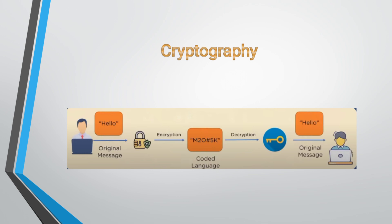Here the image shows an example of a small message transmitted between two parties. Here the message is 'hello'. Then in the encryption process, using the encryption algorithm, the hello message is converted into an unreadable format. Then on the other side, decryption converts the coded language into the original message using the key. This is cryptography.